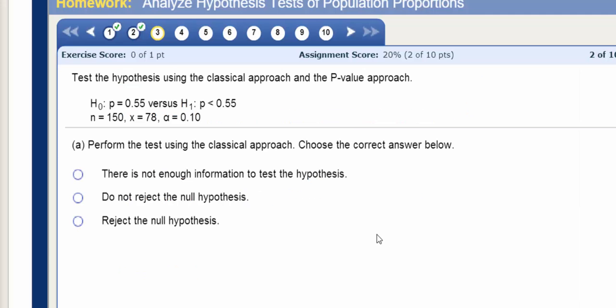So to find my critical value, we can use the fact that the level of significance, or alpha, is 0.10. And we can either use the table in the back of your book or StatCrunch to find the critical value.